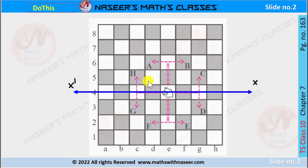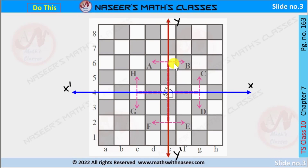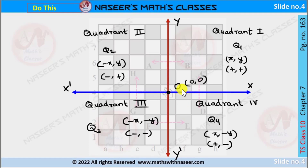To find the coordinates A, B, C, D, E, F, G, H, first of all we have to draw a horizontal line X–X dash through the knight. Next we have to draw a vertical line Y–Y dash which intersects the horizontal line X–X dash passing through the knight. They intersect at the point (0, 0) and this plane is divided into 4 quadrants.